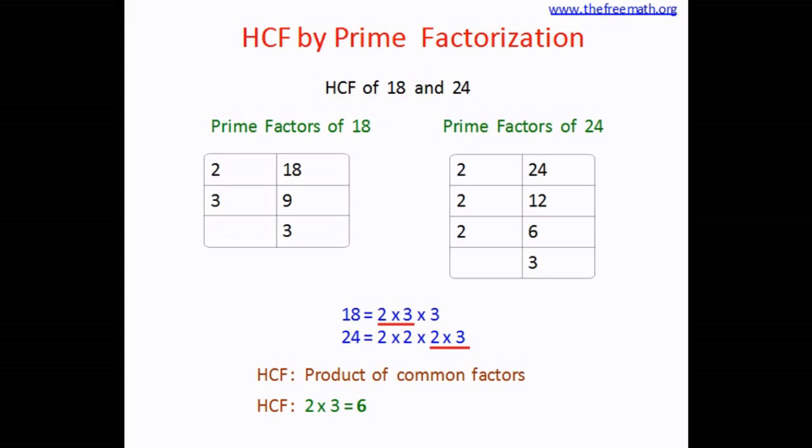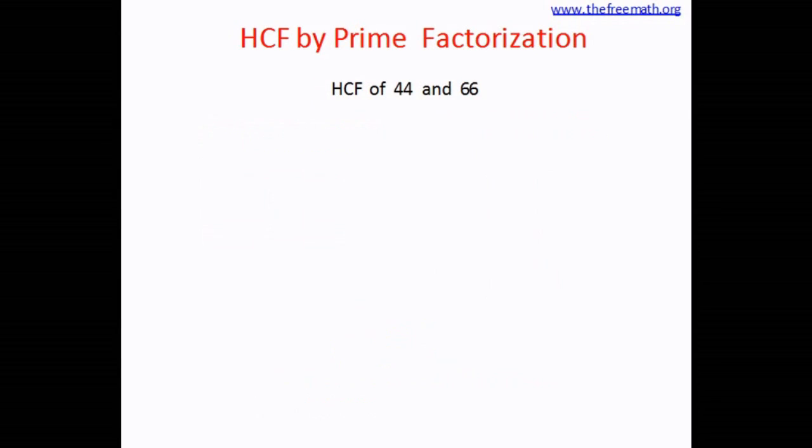And therefore the highest common factor is 6. So 6 threes are 18 and 6 fours are 24. This is how 6 is the common factor and in this case it is the highest common factor.